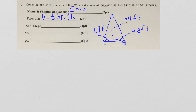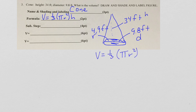Now I have a cone. I'm going to carefully shade in my base — the cone has one base. The height is 34, and the diameter is 9.8. Taking my diameter and dividing by 2, I have my radius of 4.9. This is a cone with one base. The formula is V equals 1 third pi R squared H. Make sure your numbers are in the same exact order as the formula.